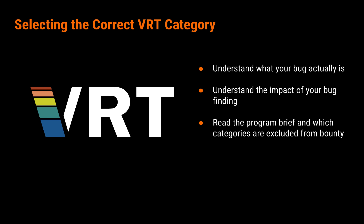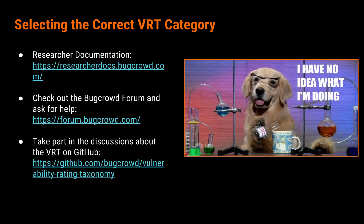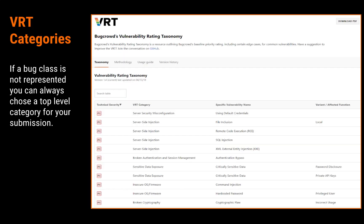Remember, bug bounty programs are a race to who can find the bugs the fastest. If you do not know how to select the correct VRT category for the bug you've just found, check out resources such as the researcher documentation. You can also check out the Bug Crowd forum and ask questions there, or take part in the discussions of the VRT on GitHub. If a bug class is not represented, you can always choose the top-level category for your submission. For example, if you find a server-side injection bug that is not a SQL injection or cross-site scripting, just choose server-side injection and submit your bug that way.